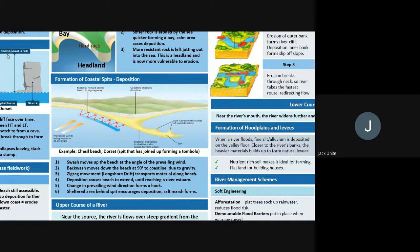Some key words to focus on: prevailing wind — our strongest, most common direction of wind driving the whole process. We've got the angle at which waves push material up and down the beach, creating a zigzag movement. Other key terms include estuary, sheltered bay, swash, and backwash.